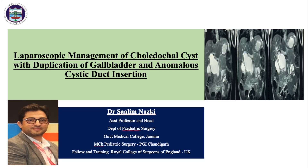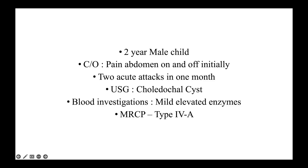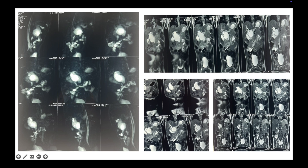Welcome back, dear friends. We'll be discussing a laparoscopic management of a choledochal cyst with a duplication of gallbladder and anomalous cystic duct insertion. The case was a two-year-old male child with pain in the abdomen on and off, who had two acute attacks in one month. Blood investigations showed mildly elevated liver enzymes, while ultrasonography confirmed a choledochal cyst and MRCP showed a Type 4A choledochal cyst, but none of the investigations confirmed a duplication of the gallbladder.